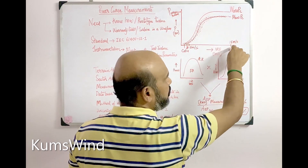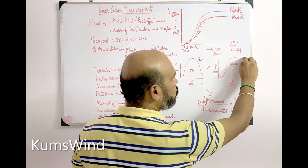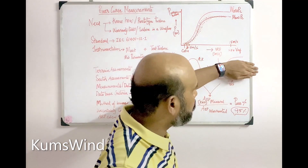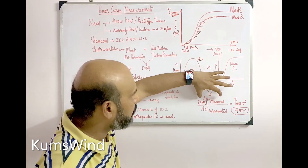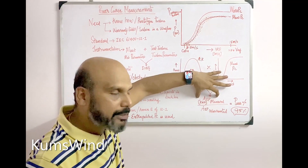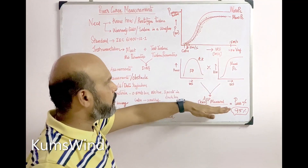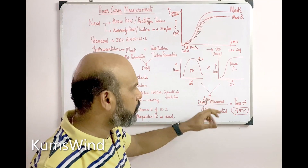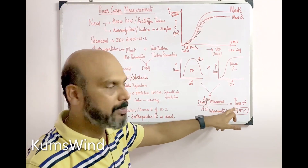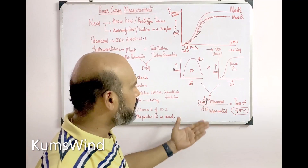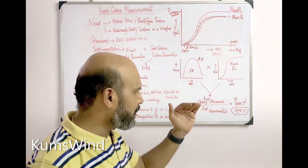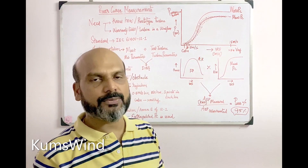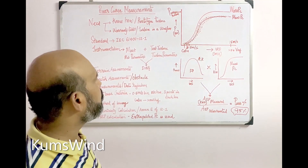After extrapolating the measured power curve to the cut-out wind speed, you use the frequency distribution to calculate the measured AEP. Similarly, substituting the warranty power curve gives the warranty AEP. Taking the ratio of measured AEP to warranty AEP gives the pass percentage or performance percentage. In the industry today, 95 percent is the benchmark — most turbine OEMs are expected to perform above 95 percent as required by wind farm owners.